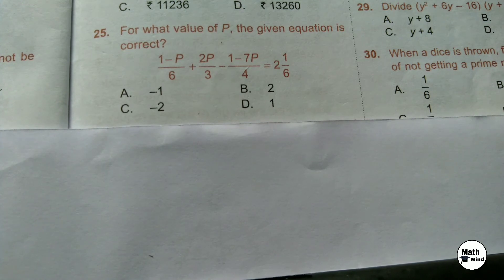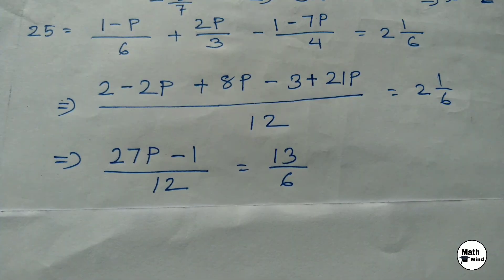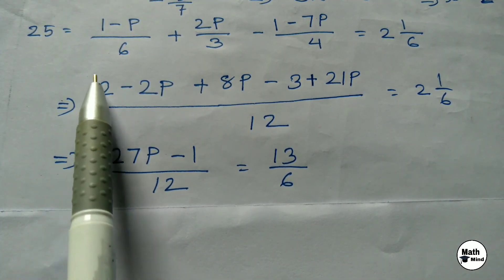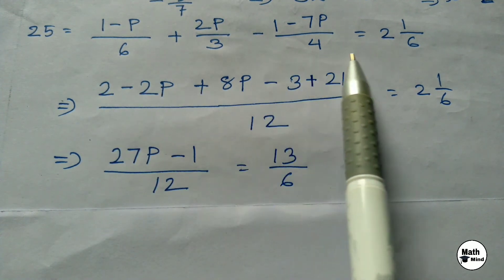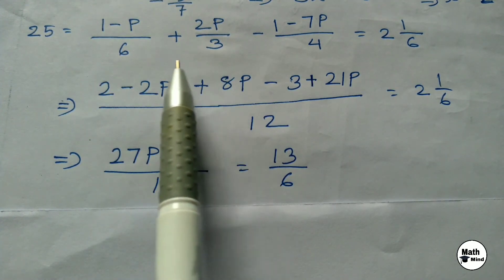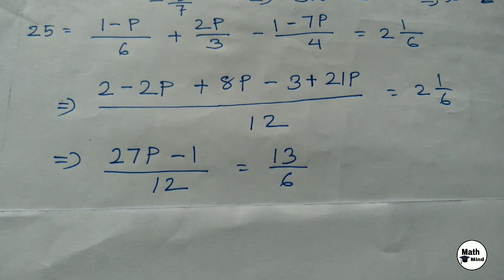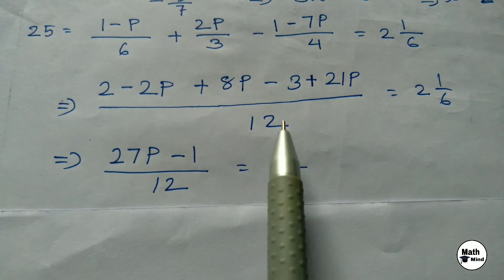Question 25: For what value of P is the given equation correct? To solve this equation with fractions, we first need to make the same denominator on the left-hand side. The common denominator on the left-hand side will be 12.